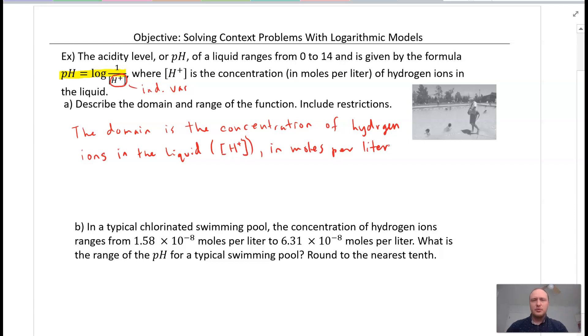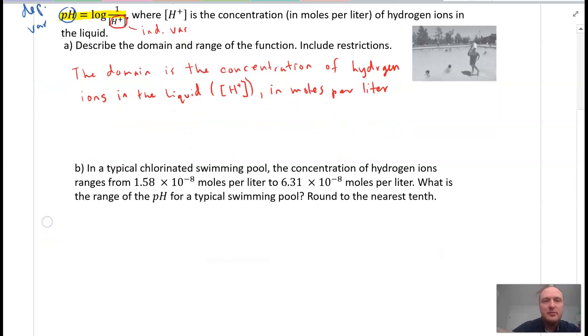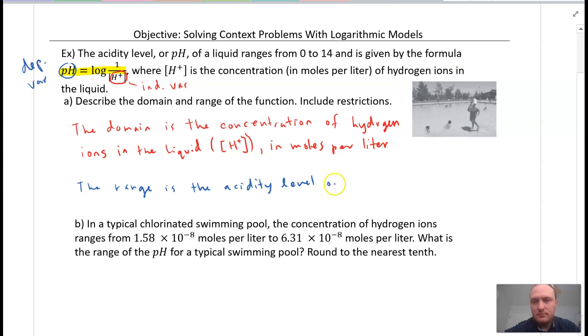So again, before we get to restrictions, I want to go back to my formula. So here I have pH. This is the output. This is the dependent variable. So this is our range, pH, and pH is the acidity level. So we can say the range is the acidity level of a liquid. This is the acidity level of a liquid, and this is pH, the pH level.